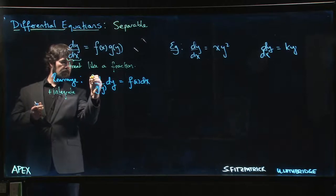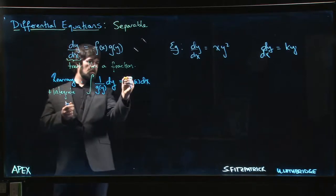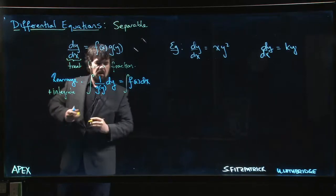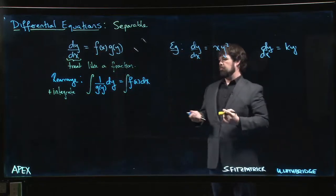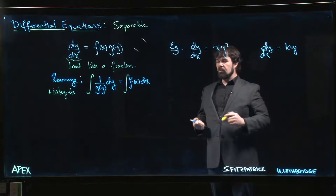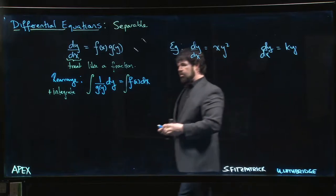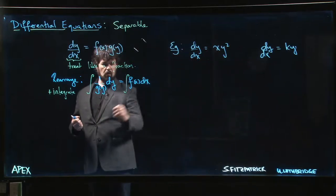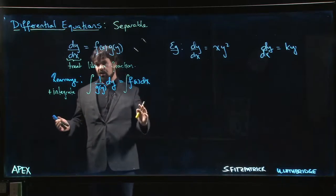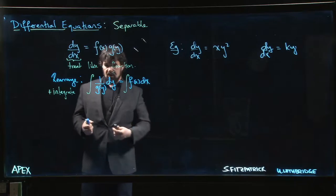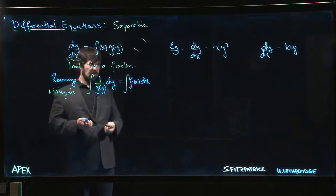Alright, the way you undo a differential is by integrating, by finding an antiderivative. Then you solve both sides independently, treating the integration variable as y on this side and x on this side, then try to reconcile things at the end. This is kind of standard operating procedure for a separable equation.